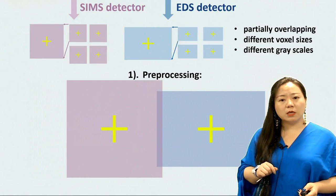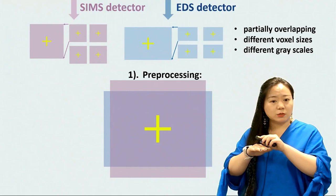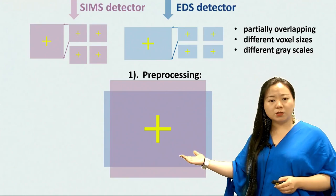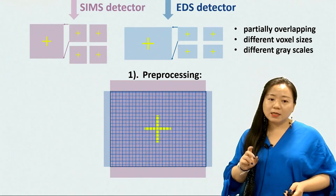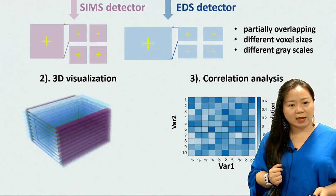After pre-processing of the images, we are able to bring these two datasets to the same grey scale and align them to the same area of interest, and then resample them to the same voxel size. The datasets are then ready for 3D visualization and correlation analysis.